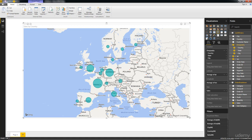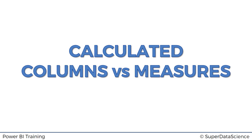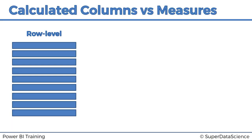So let's learn about calculated measures. I've prepared some slides, let's go through them. Alright — calculated columns versus measures. We've already discussed calculated columns, so this will help us understand how calculated measures are different. Let's imagine we've got our data set, and on the left we've got all these rows — every rectangle represents a row. When we aggregate our data, certain rows are combined together — for example, rows that are in the same region.